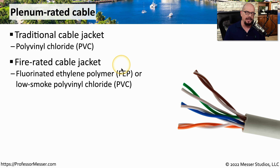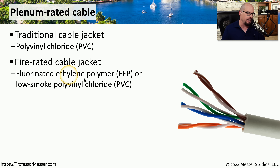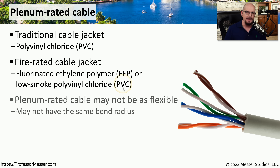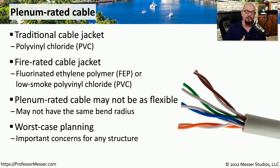The jacket around a standard ethernet cable is commonly made of PVC or polyvinyl chloride. If you're putting cable into a plenum, you'll need a special plenum-rated cable that uses FEP — fluorinated ethylene polymer — or a low-smoke version of polyvinyl chloride. These cables may not be as flexible as non-plenum-rated cable, but they are safer in the case of a fire. Make sure you're using the appropriate type of cabling for this environment.